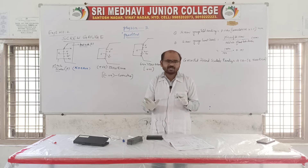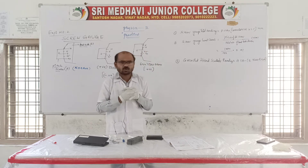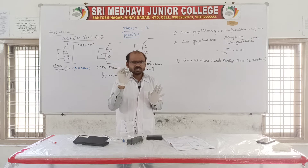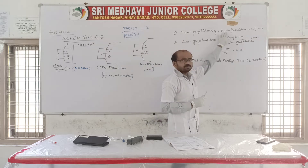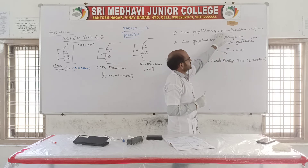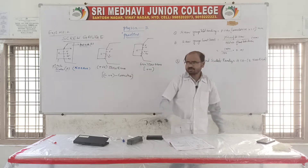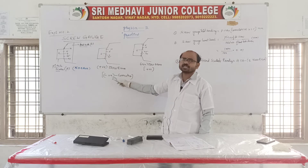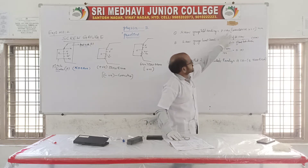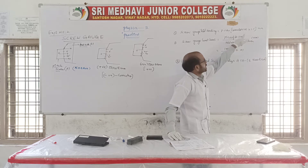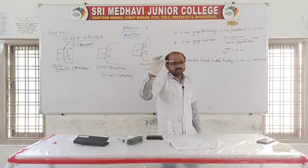Before starting the experiment, identify whether there is a positive or negative zero error. Now, the least count of the screw gauge: the total reading formula is PSR plus corrected HSR. If there is a positive error, subtract the value; if negative error, add the value. Then multiply corrected HSR by least count to get the answer in millimeters.